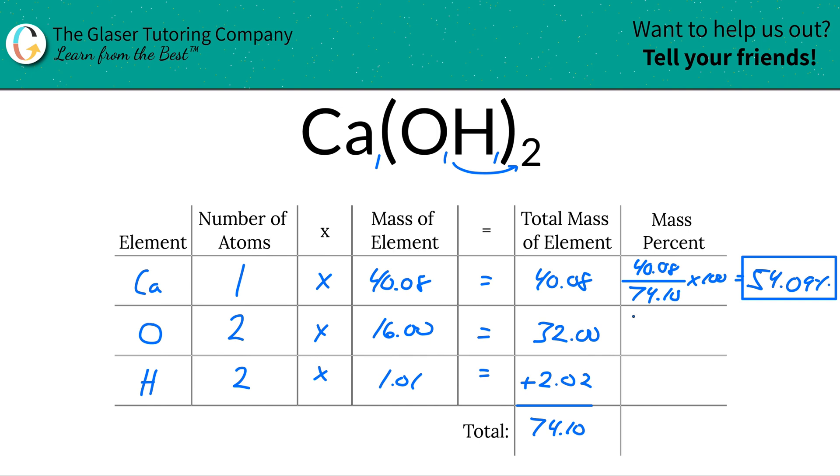How about the percent of oxygen? We'll simply take now the total amount of oxygen, not the molar mass of oxygen. You got to take the total. So that's why we need to take into account the number of atoms. We're going to do 32 divided then by 74.10, multiply that by 100, simple percent formula. And this works out to be 43.18%. And that takes care of that.